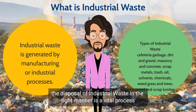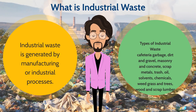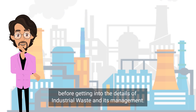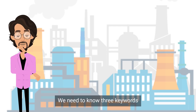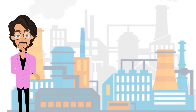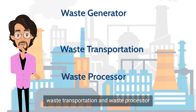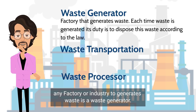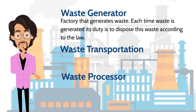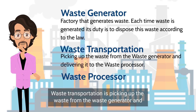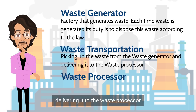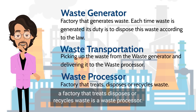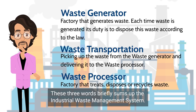The disposal of industrial waste in the right manner is a vital process. Before getting into the details of industrial waste and its management, we need to know three key words: waste generator, waste transportation, and waste processor. Any factory or industry that generates waste is a waste generator. Waste transportation is picking up the waste from the waste generator and delivering it to the waste processor. A factory that treats, disposes, or recycles waste is a waste processor. These three words briefly sum up the industrial waste management system.